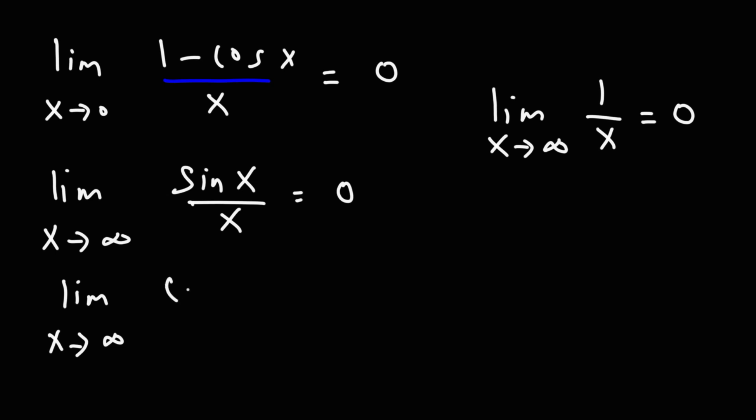So, as x approaches infinity, the expression cosine x over x also goes to 0.